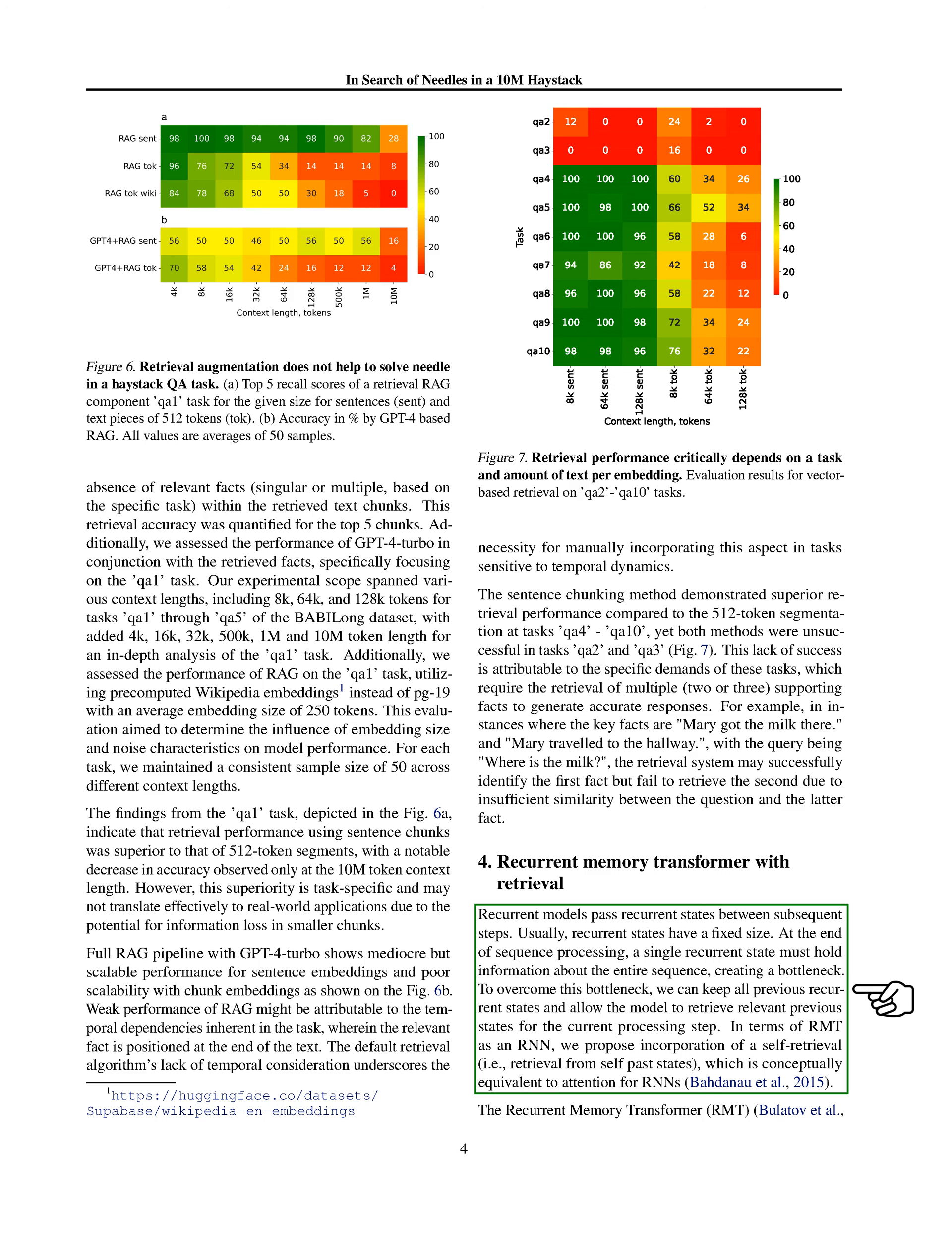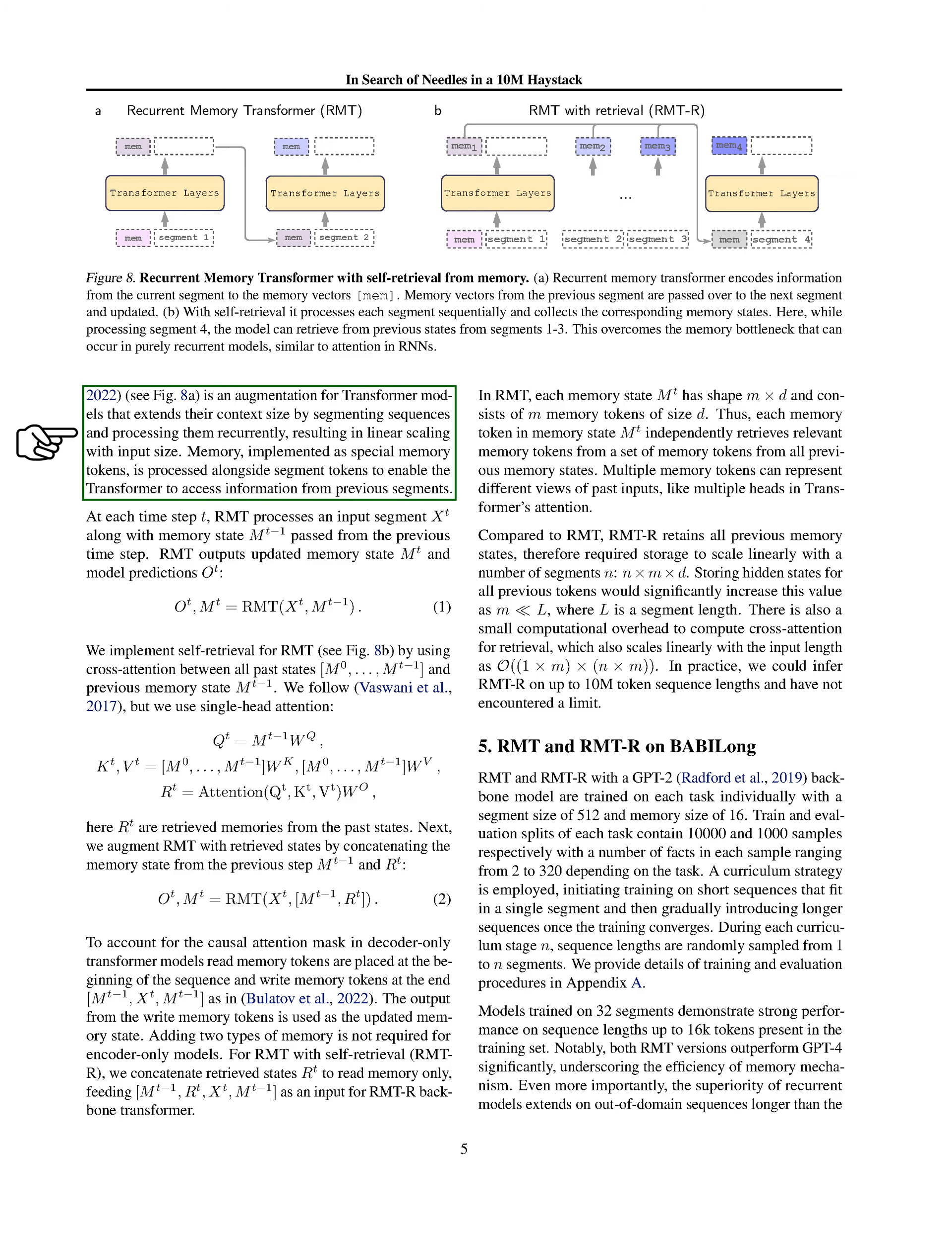The Recurrent Memory Transformer (RMT) enhances transformer models by breaking down sequences into segments and processing them one after the other. This method allows the model to handle longer input sequences more efficiently. In RMT, memory is represented by special tokens that are processed alongside the current segment tokens. This setup enables the transformer to access information from earlier segments. At each step, the RMT takes in a segment and the memory state from the previous step, updates the memory state, and makes predictions.